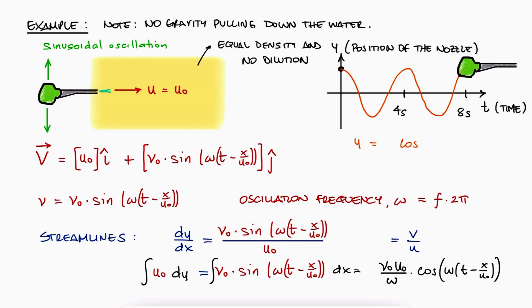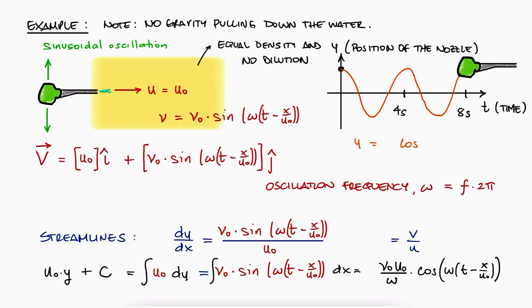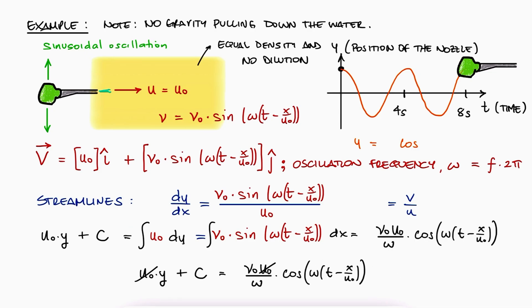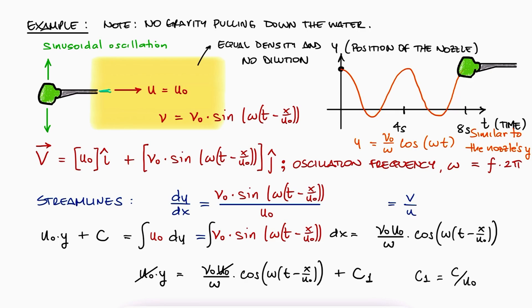On the left, we get u0 times y, and the constants from the integral is 1, c. If we solve for y, we see that the streamline for the water coming out of the nozzle would indeed be a cosine wave. The new constant would be whatever c was divided by u0, and this c1 just tells us exactly what the position of y is for t and x equal to zero. So, that's what we get for the streamlines of this flow.